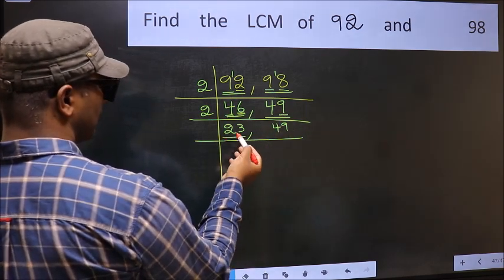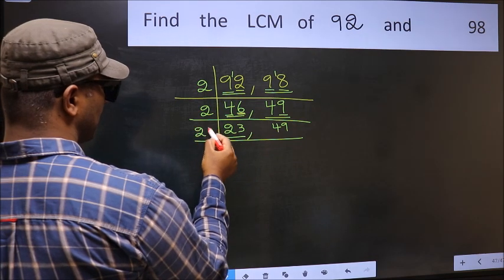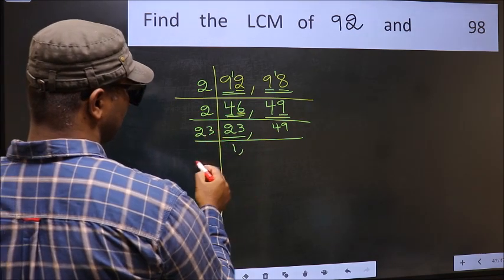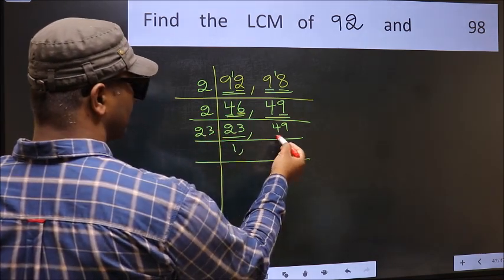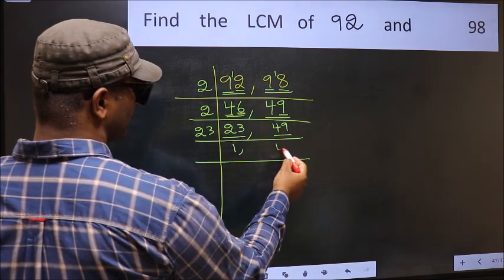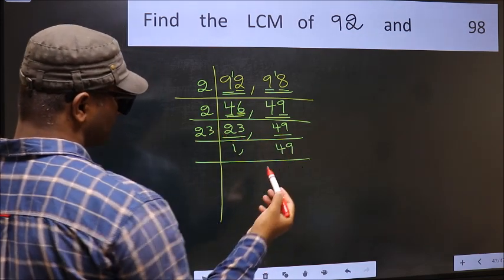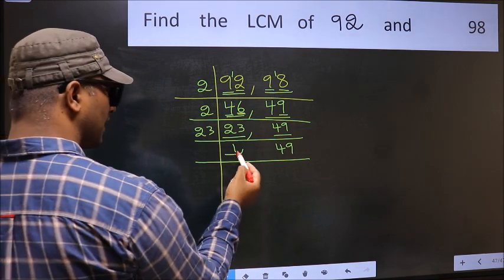Now here we have 23. 23 is a prime number, so 23 times 1 equals 23. The other number 49 is not divisible by 23, so you write it down as it is.